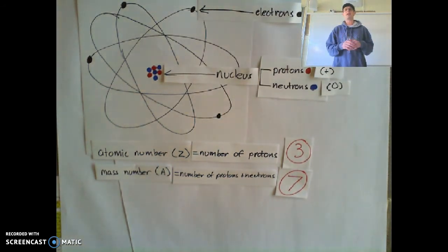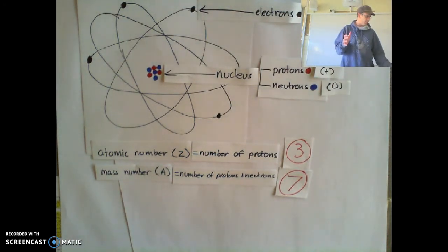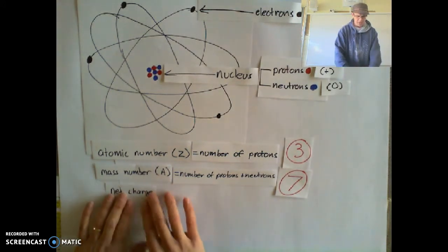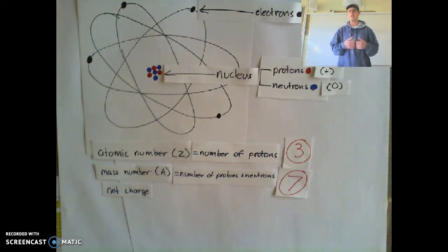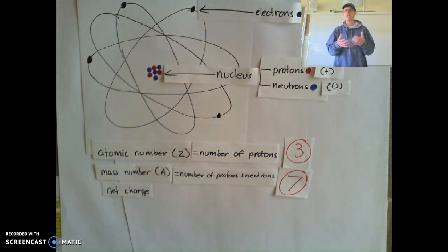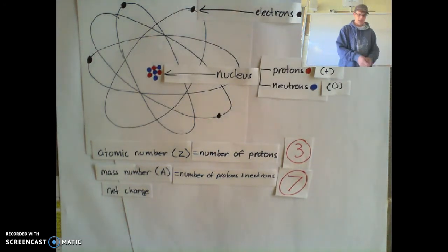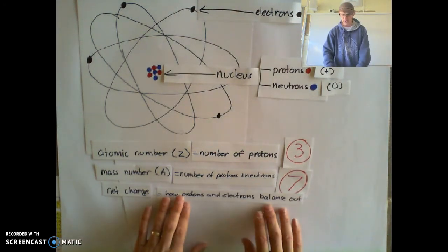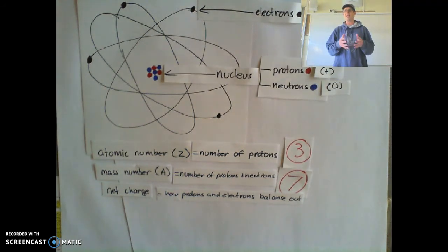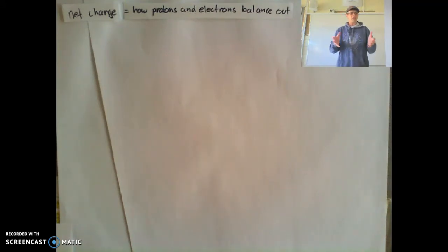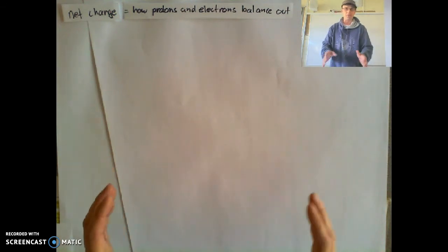Now finally, the last characteristic of an atom is the most complex, and it's called net charge. I don't really have a good formal definition for net charge, so we're just going to say it's how protons and electrons balance each other out. Net charge is about how protons and electrons balance each other out.